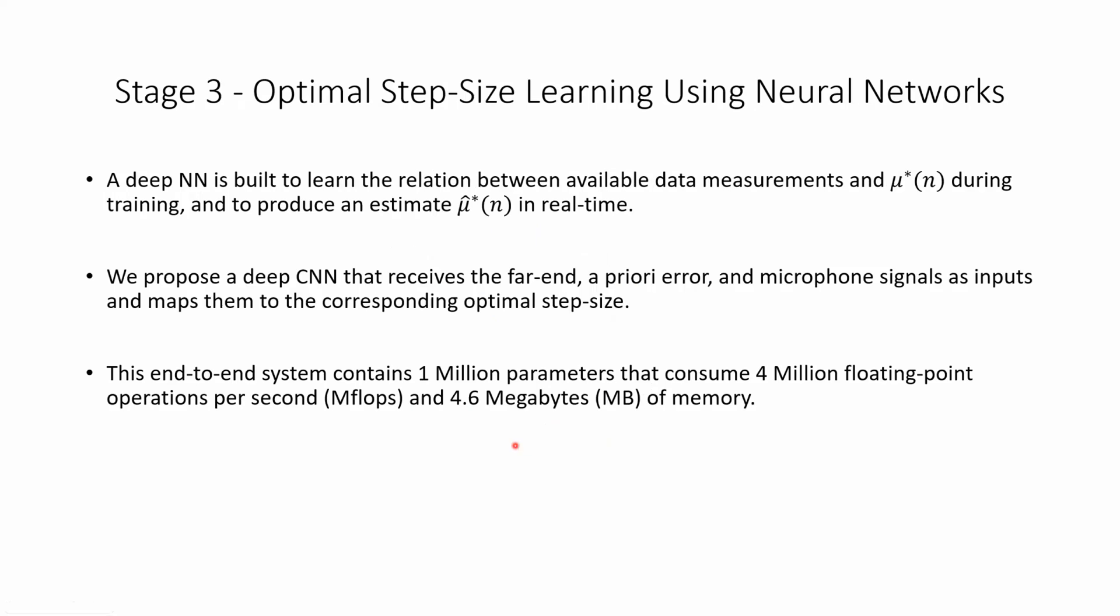Once we have derived the optimal step size based on solving the optimization problem we introduced in the previous slide, a deep neural network is built to learn the relation between data measurements and this optimal step size and to produce an estimation of it in real time. We proposed a pretty basic CNN that receives the far-end, a priori error, and microphone signal and maps them into the step size. And why this data of all data points? Because we have shown that the step size is analytically dependent on these quantities, meaning that it makes a lot of sense to use them.